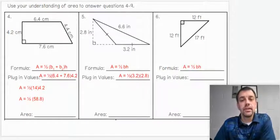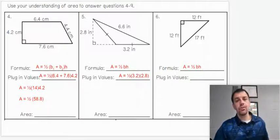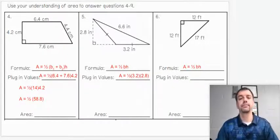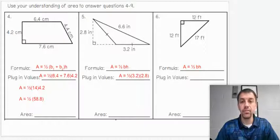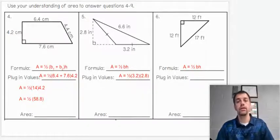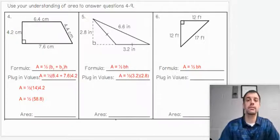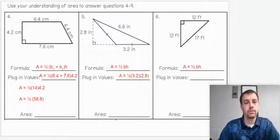So let's go ahead and simplify that. Oops, which I didn't do. So 3.2 times 2.8. I'll make sure I give the answer. 3.2 times 2.8 gives you 8.96. And if you divide that by 2, your answer should be 4.48 inches squared.